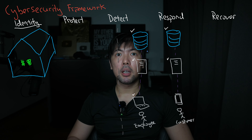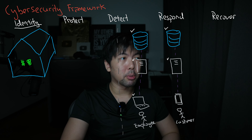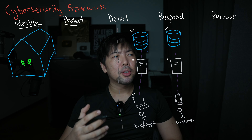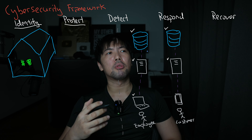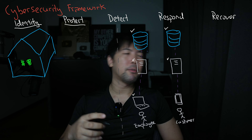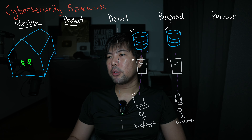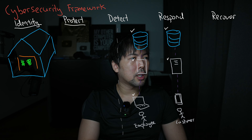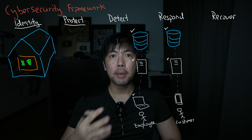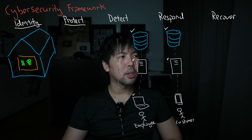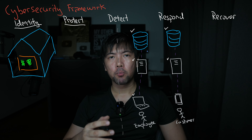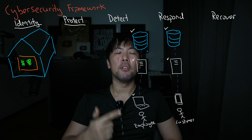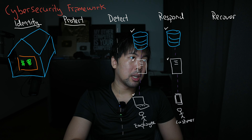Once we've identified our assets, we move to the next phase: Protect. Protect is important because we want to know what security controls we can introduce to safeguard our assets. Using the home analogy, you would purchase something like a vault or a safe box to keep your valuables — your passport, cash, and jewelry — and only people who have the PIN code or key can open it and access the valuables.